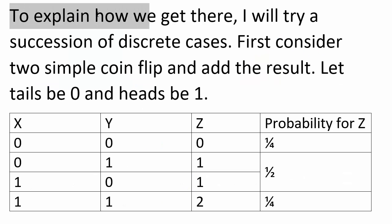To explain how we get there, I will try a succession of discrete cases. First consider two simple coin flips and add the result. Let tails be 0 and heads be 1. So we can have tails and tails, tails and heads, heads and tails, or heads and heads. So the sum will be 0, 1, 1, and 2. There are a total of four different possibilities, and you'll get a sum of 0 a quarter of the time, a sum of 2 a quarter of the time, and a sum of 1 half the time.